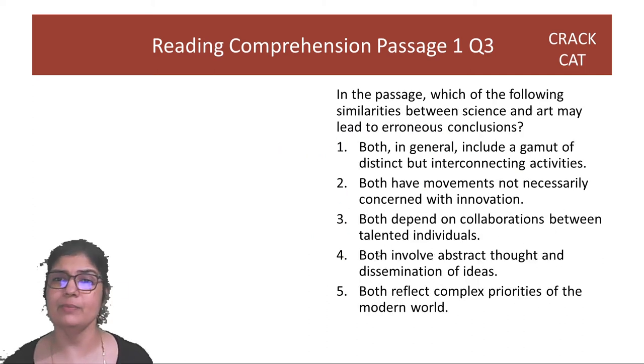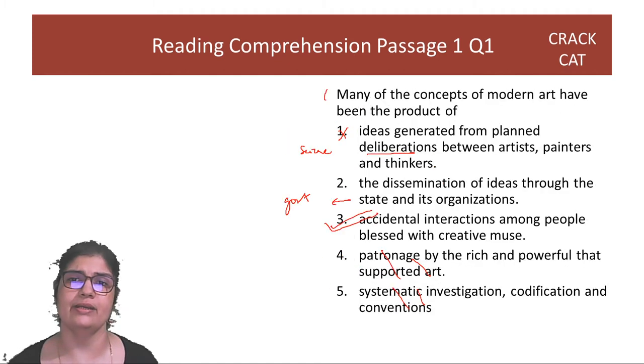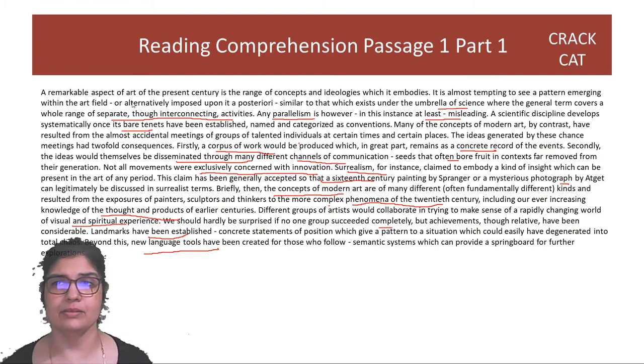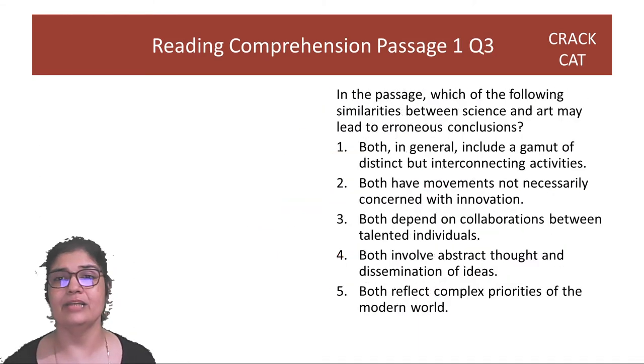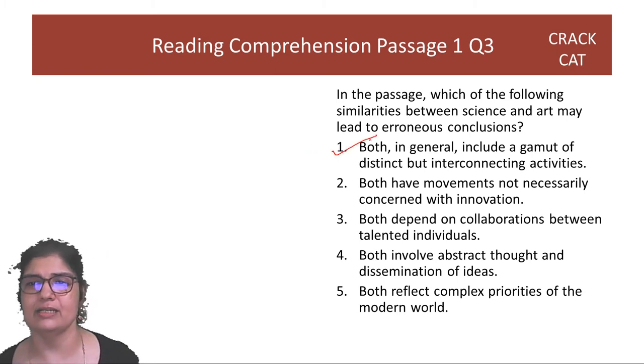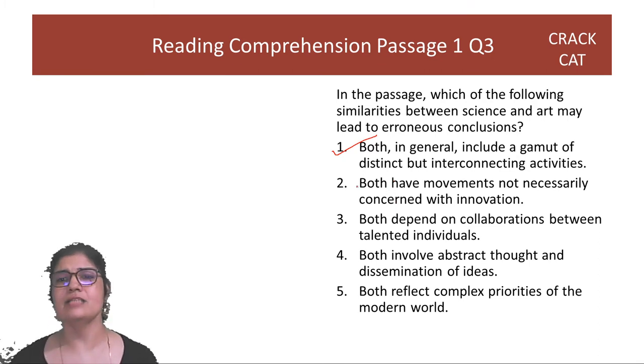Question three: Which of the following may lead to erroneous conclusions? The passage starts from there—it is tempting to see a pattern because if you see it as separate, this is where the misleading conclusion starts. This temptation starts here. So this is the problem. You have to say that if we think of art and science like this, it will lead to a wrong conclusion because they themselves are saying that it gives a tempting analogy which may not be true. So the answer has to be first option. Both in general include a gamut of distinct but interconnecting activities. Science has only been mentioned in two ways: the analogy to art, and science develops from basic tenets. Innovation, collaboration—nothing else about science is mentioned. So the only possibility is option one.